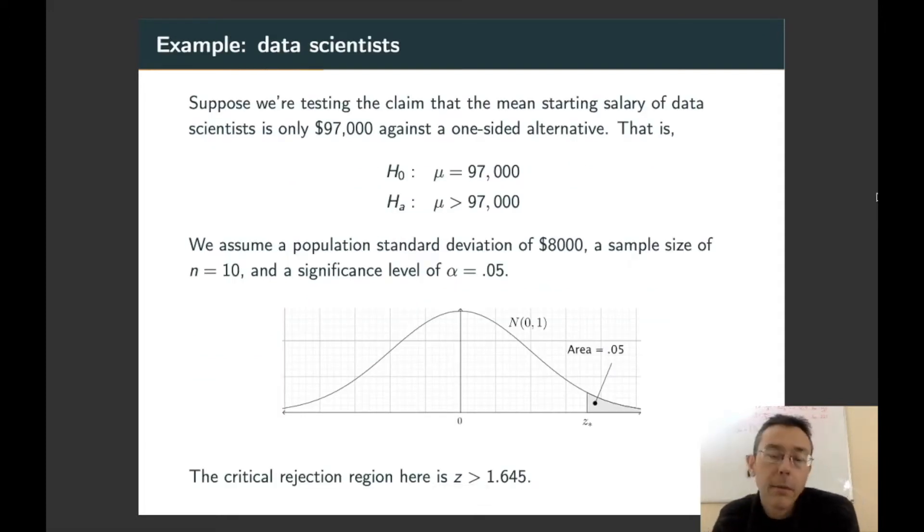Suppose we're testing the claim that the mean starting salary of data scientists is $97,000 against a one-sided alternative. The null hypothesis is that the mean starting salary for the population is $97,000, and the alternative will be that it's greater. Throughout this example, we're going to assume normality for that population with a standard deviation of $8,000. We'll assume a sample size of 10 and a significance level of alpha equals 0.05.